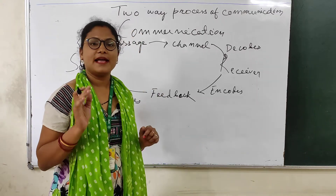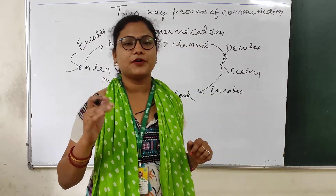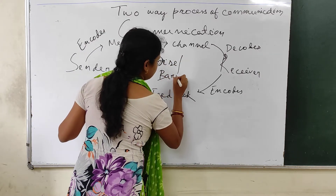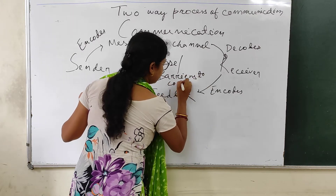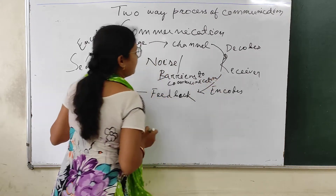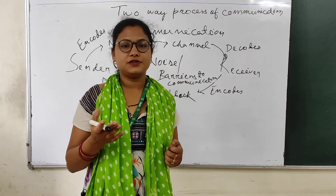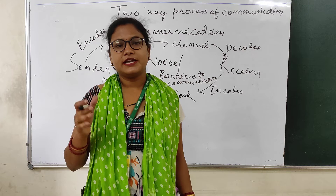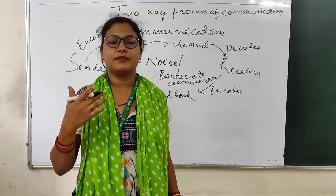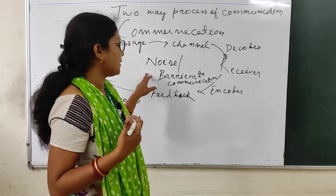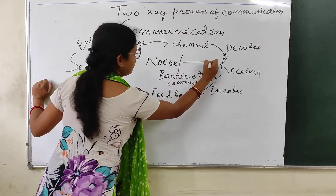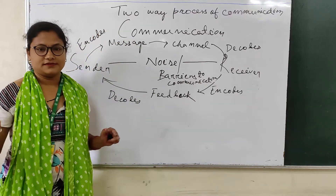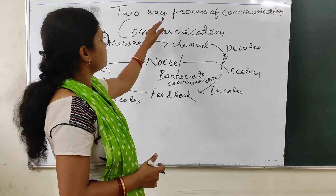Now, if any barrier — meaning any interruption — comes inside the process of communication, it is known as noise (N-O-I-S-E), or barriers to communication. For example, if any technical failure happens between the sending and receiving of messages, you cannot hear or understand what is being said. That barrier is the noise inside the communication process — any disturbance or interruption.